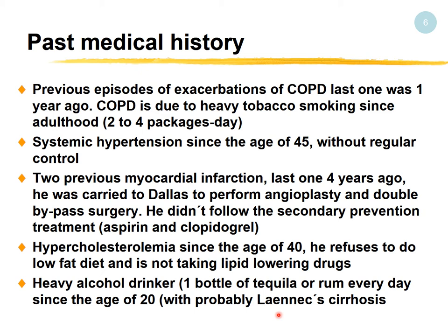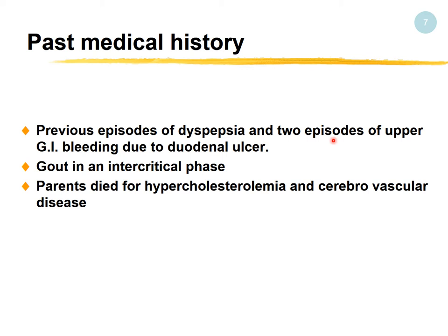He had previous episodes of dyspepsia and two episodes of upper GI bleeding due to duodenal ulcer. Parents died of hypercholesterolemia and cerebrovascular diseases, so this patient possibly has a familial history — some kind of hereditary hyperlipidemia, hypercholesterolemia, possibly in heterozygous form. We will deal with hypercholesterolemia a little bit later.